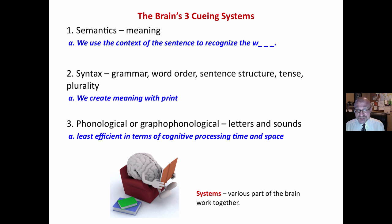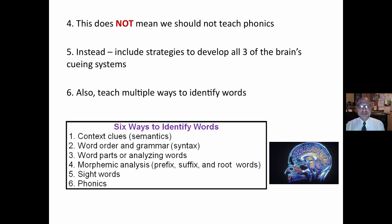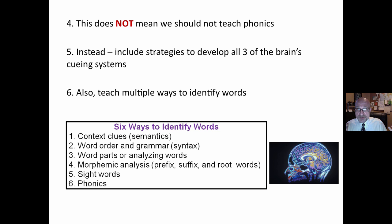We call them systems because various parts of the brain work together, not one simple part. Now, this does not mean that we should not teach phonics. Instead, we need to include strategies to develop all three of the brain's cueing systems. A cueing system is not an instructional approach, method, or pedagogy. In terms of word identification, we are talking about the systems the brain uses to cue or recognize words during the process of reading.